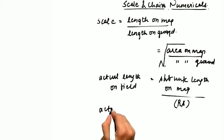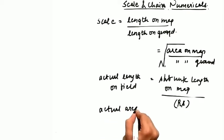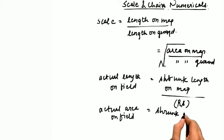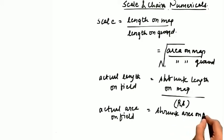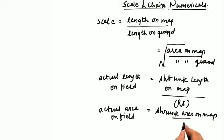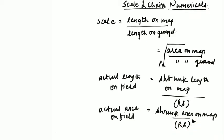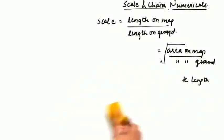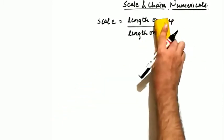For actual area on field, divide the shrunk area on map by the square of the reduced scale. If the reduced scale is in the format 1:S, you take S squared in the denominator. The shrinkage factor can also be calculated from areas as the square root of (reduced area on map divided by original area on map).